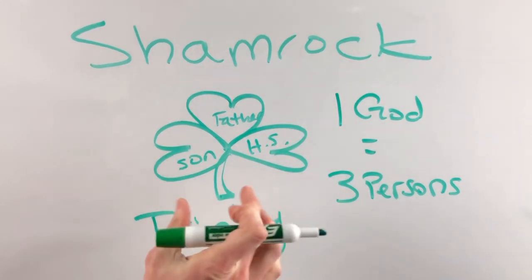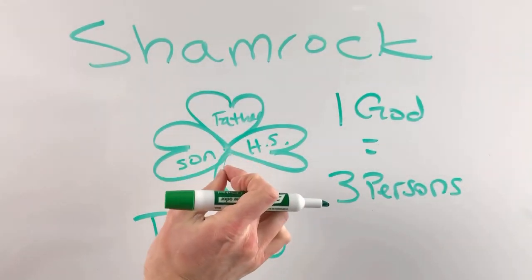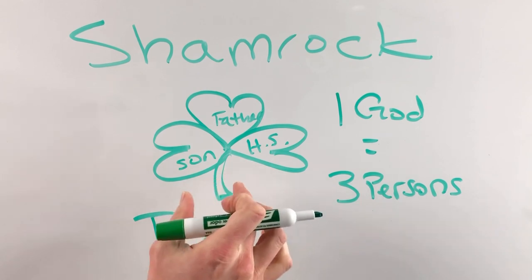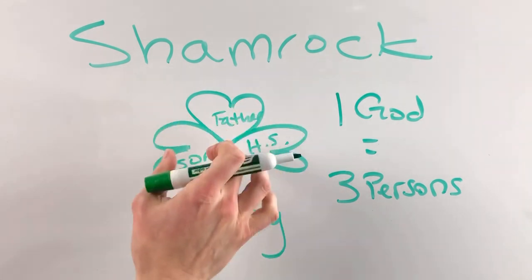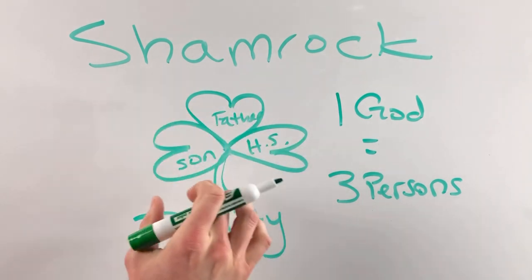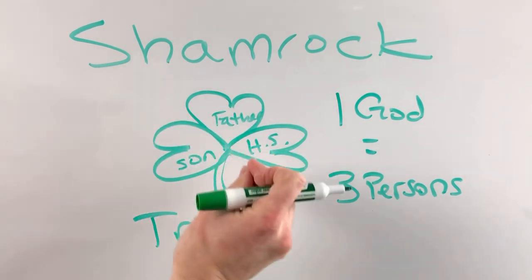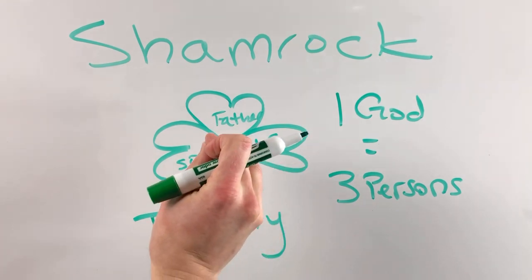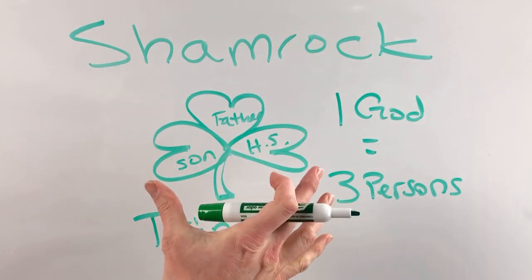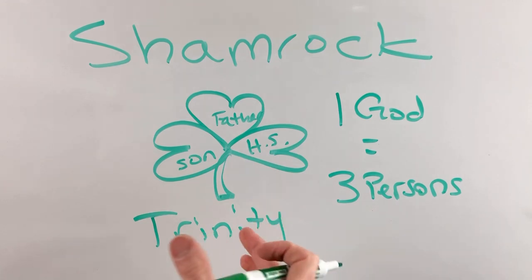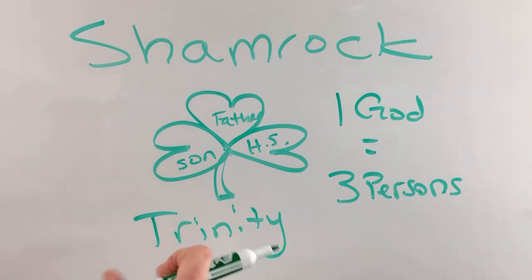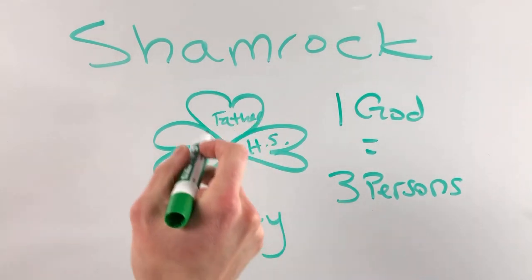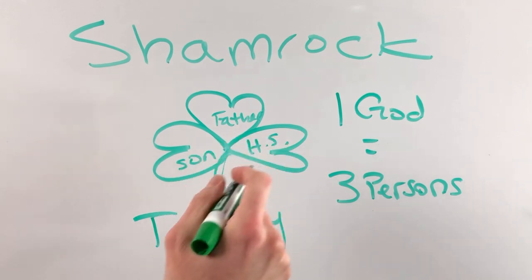Even though there is one stem to the shamrock — this three-leaf clover — each of the leaves are attached as one but are also separate. So it was a great metaphor to describe the fact that we believe in one God who is Father, who is the Son, and the Holy Spirit.